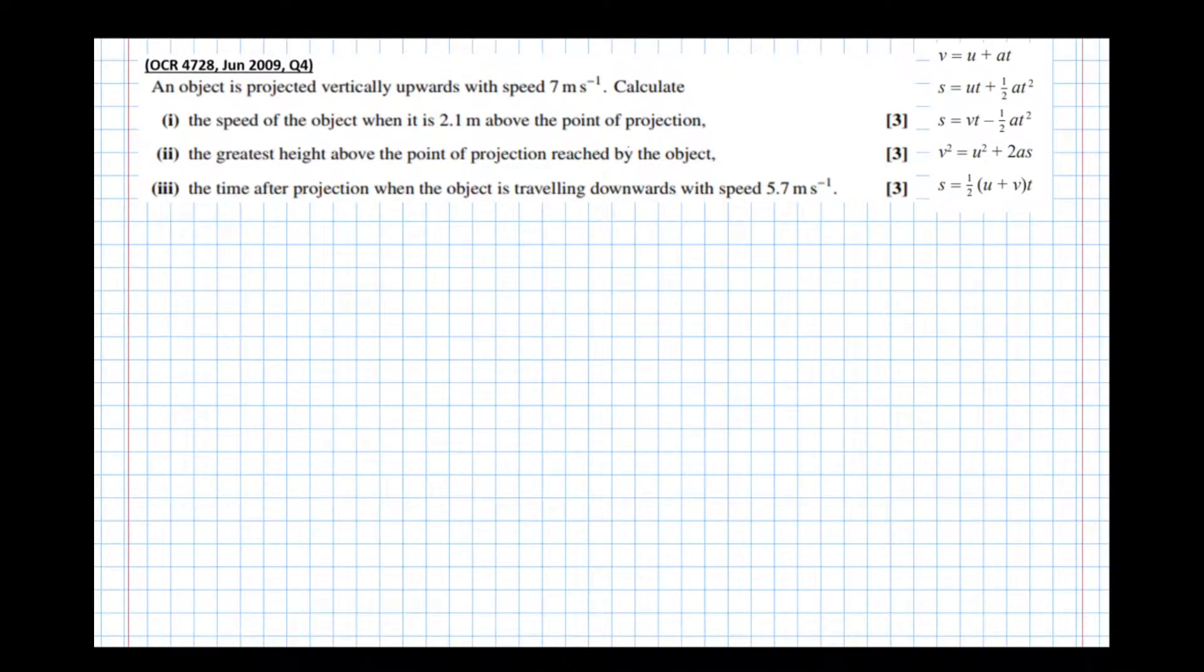So in this video we're going to have a look at the equations of constant acceleration in kinematics. In the top right hand corner of the screen there, v equals u plus at is one of them, s equals ut plus a half at squared, s equals vt minus a half at squared, v squared equals u squared plus 2as, and s equals a half of u plus v times t. They're all the equations of constant acceleration, and you don't need to remember those because they're given in your formula sheet.